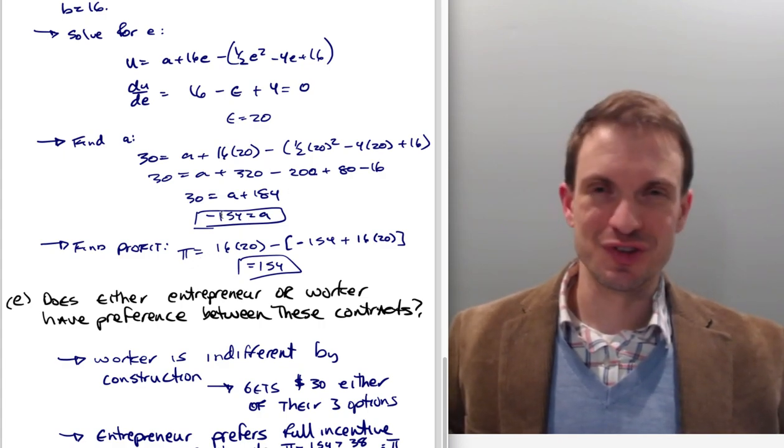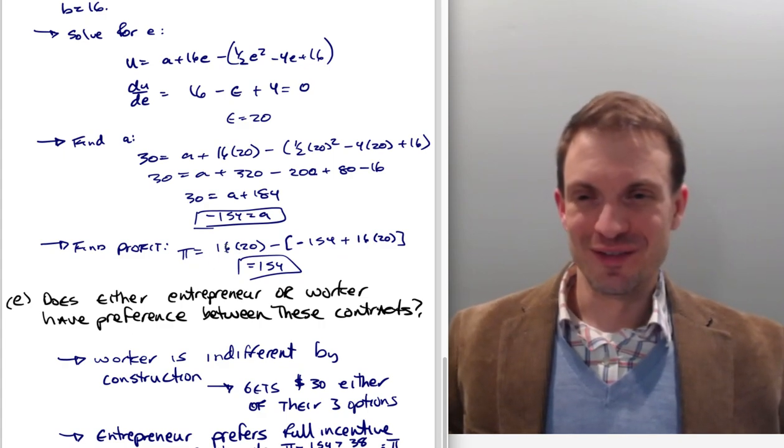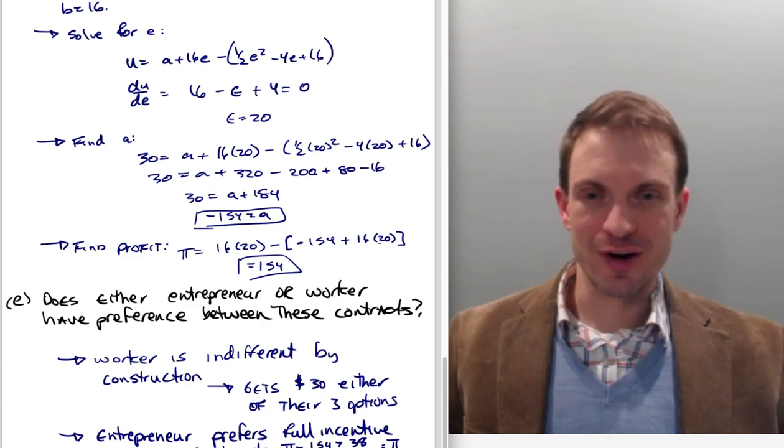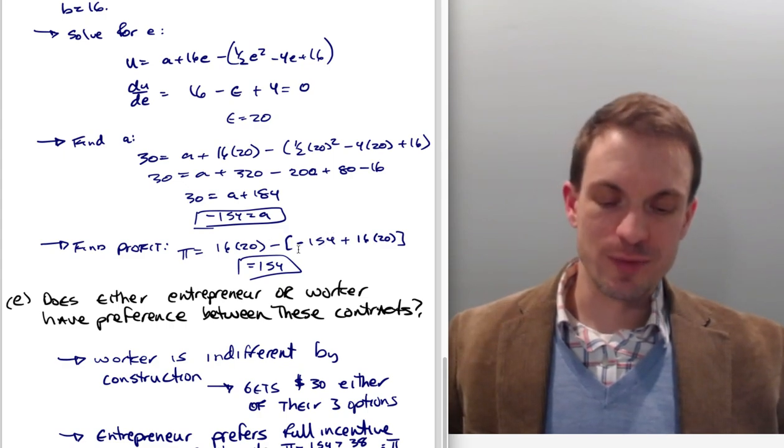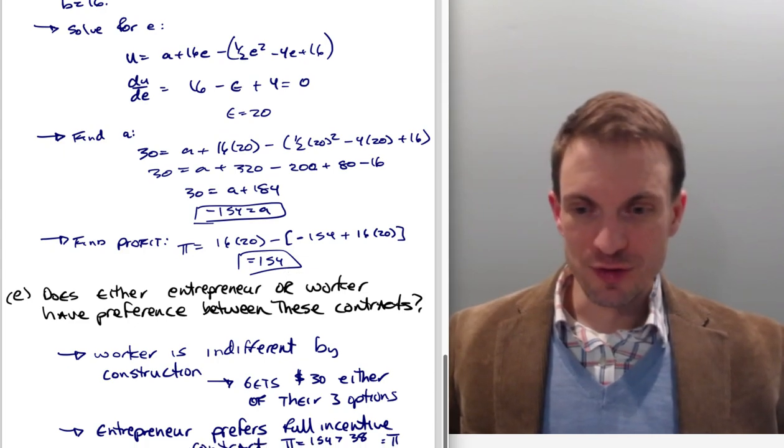What's our profits? It's just this $154,000. You could actually write out the profit function. Well, of course, it's going to be 16 times 20, which is revenue, minus our labor cost. Well, our labor cost is going to be 16 times 20 for every unit that's produced. That's just going to subtract off this $154,000 they're giving to us. So $154,000 minus minus is positive $154,000. Great.